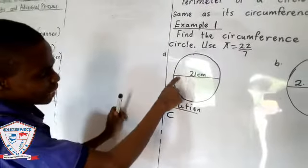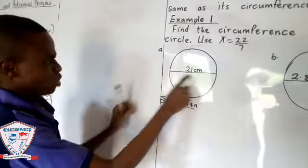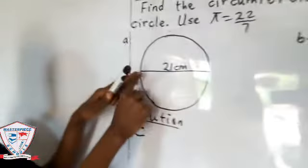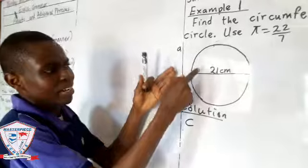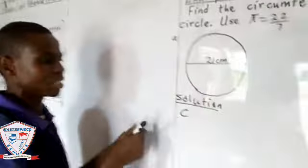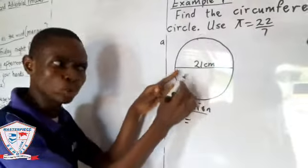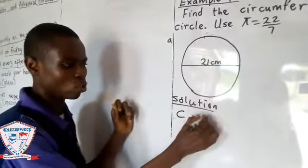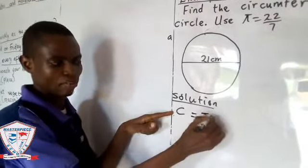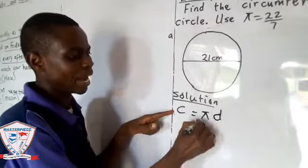Can you see that line? This long line is the diameter. Diameter is 21 centimeters. So since diameter is given to us, the formula we use is C = πd.